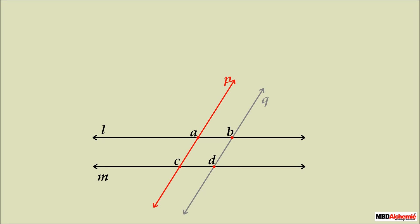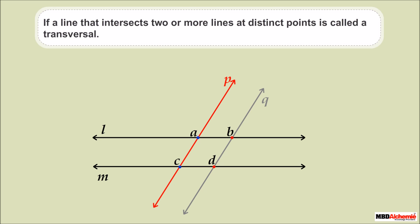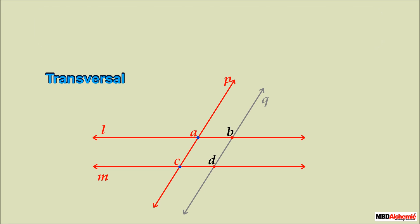Does line p intersect both lines l and m? Yes — p intersects l and m at points A and C respectively. A line that intersects two or more lines at distinct points is called a transversal. Thus, line p represents a transversal line.